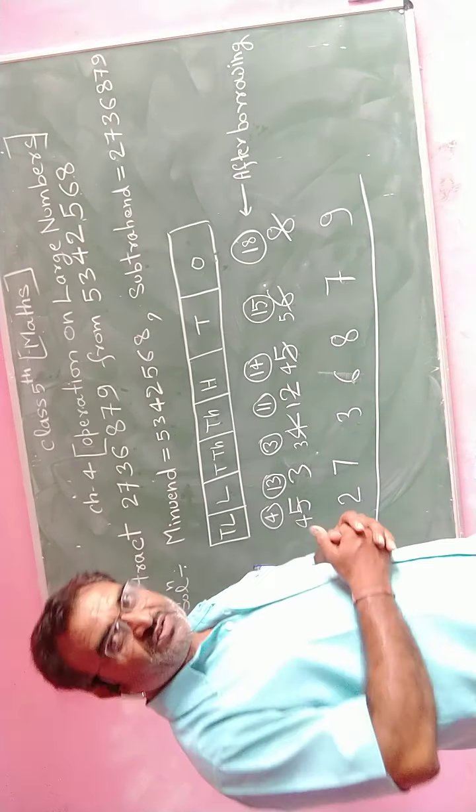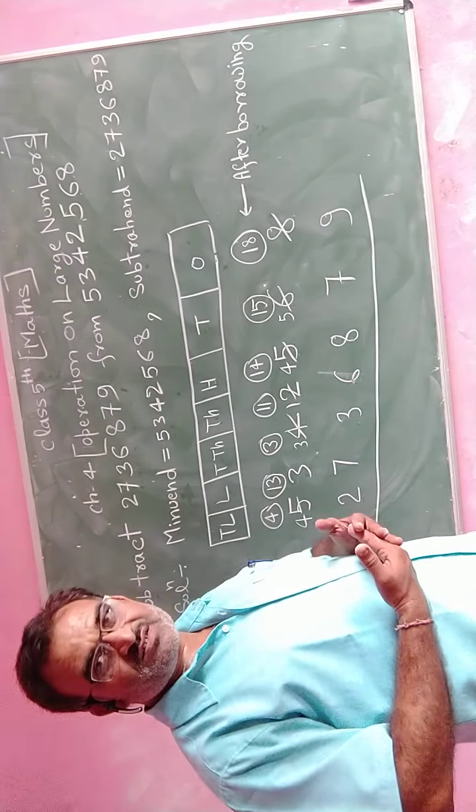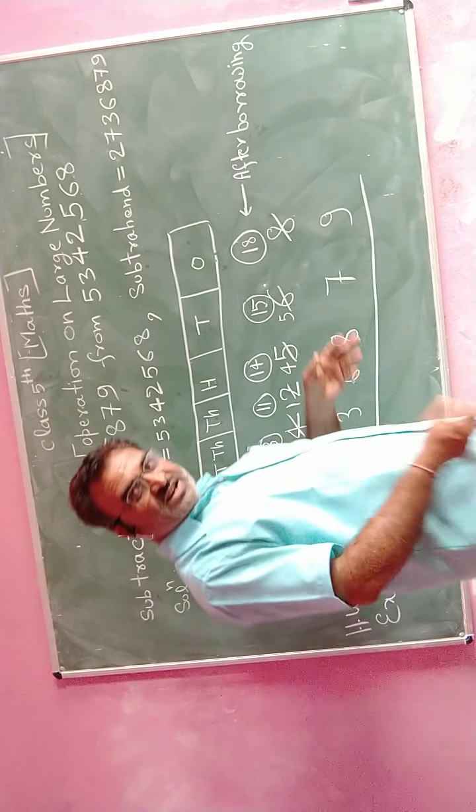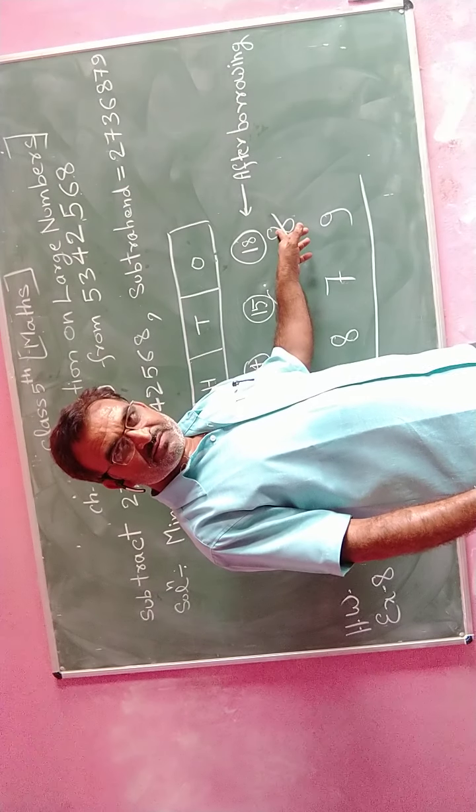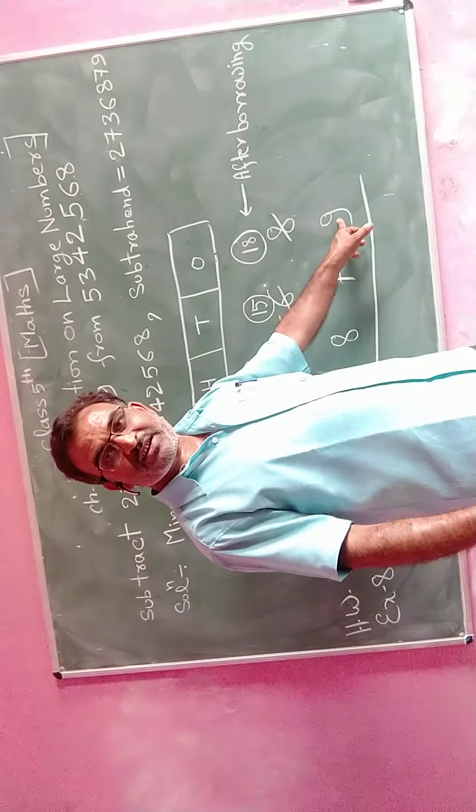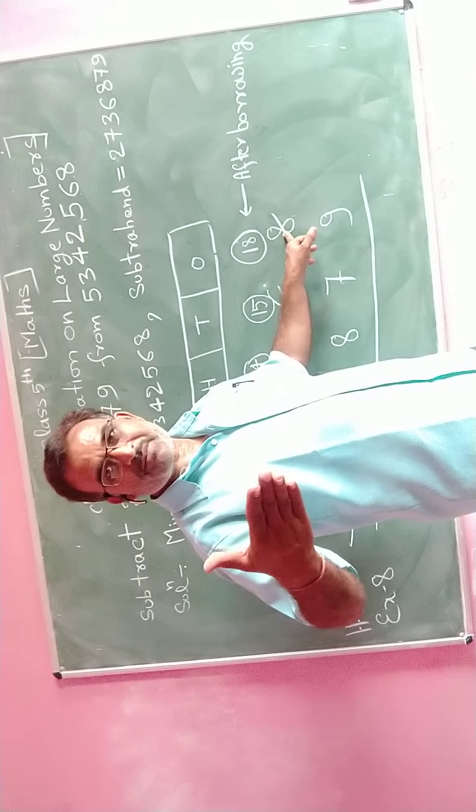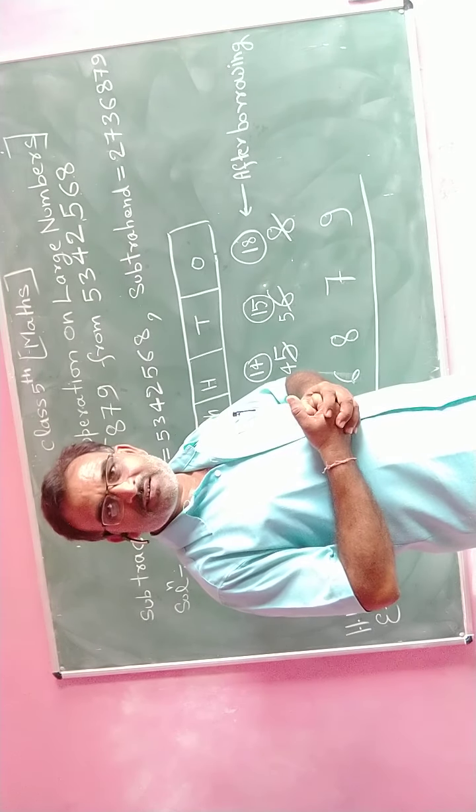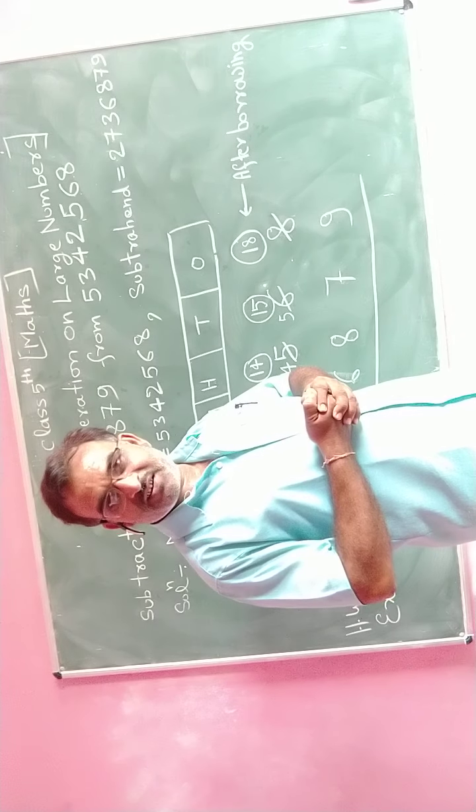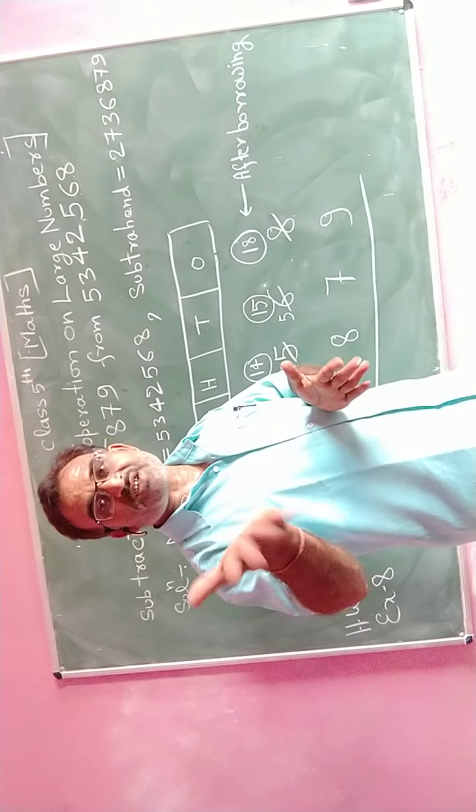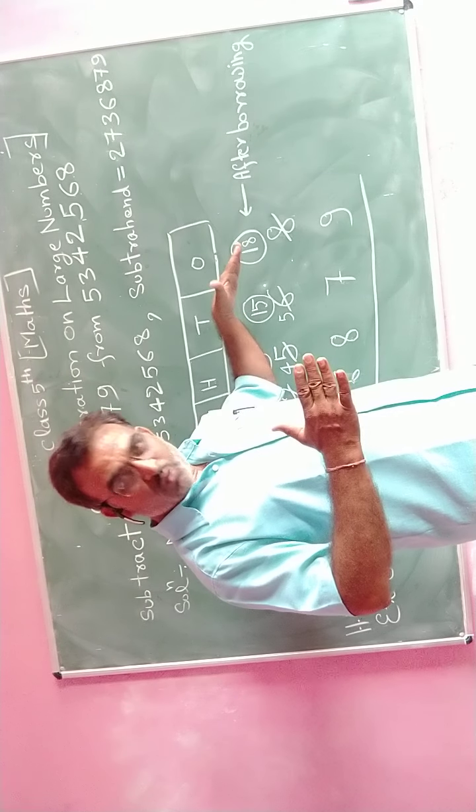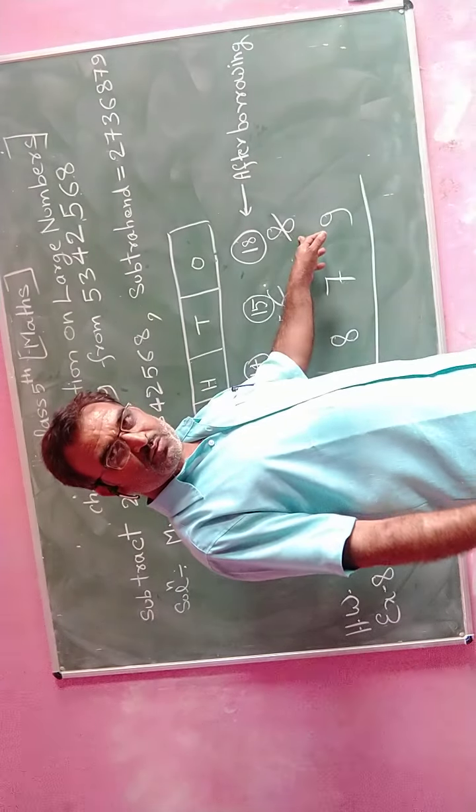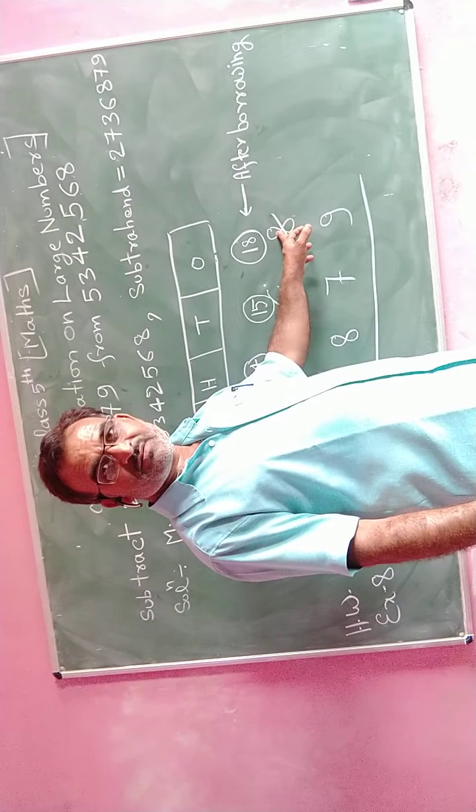Now we have to proceed with subtraction. This process is started from the right side, one's digit first. Subtraction start. Here see, in minuend this number, this is subtrahend, that is minuend. In this example, we have to subtract 9 from 8, 9 from 8 to subtract.